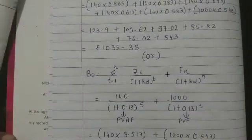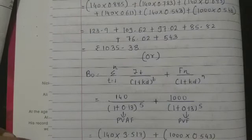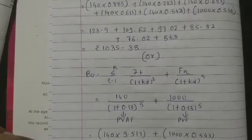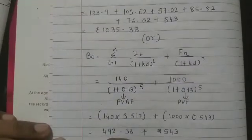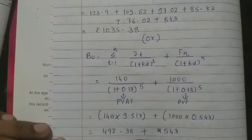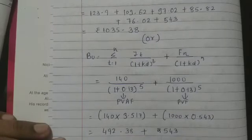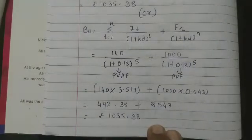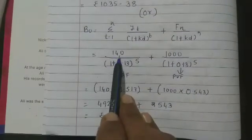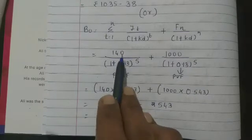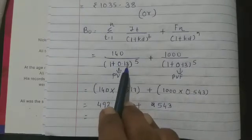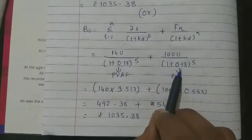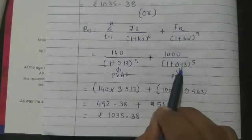Now multiply: 492.38 + 543 gives us rupees 1035.38. The concept is that 140 is received every year for 5 times, so we need to calculate its present value by discounting at the rate. 1000 rupees that will be received after 5 years, we discount at 13 percent to know the present value.